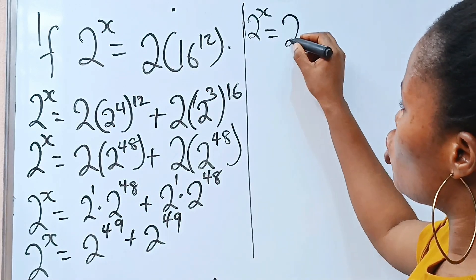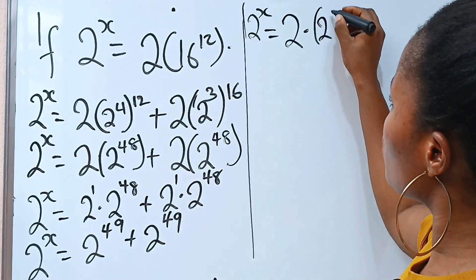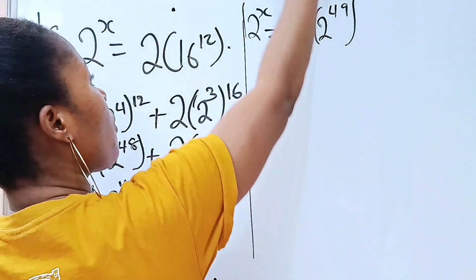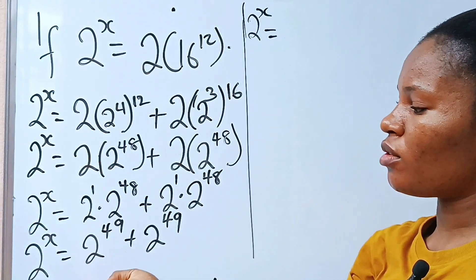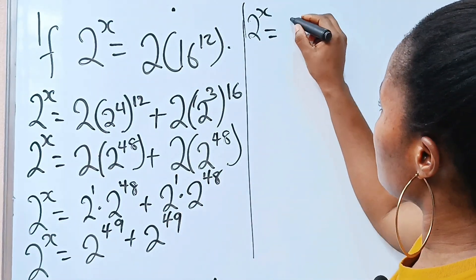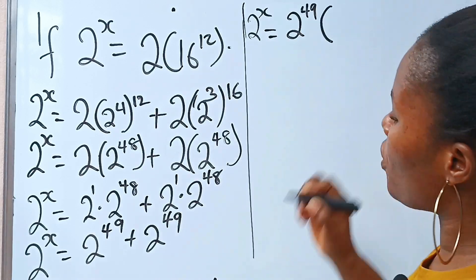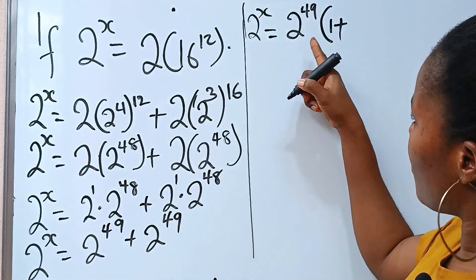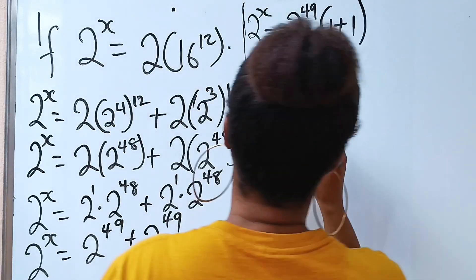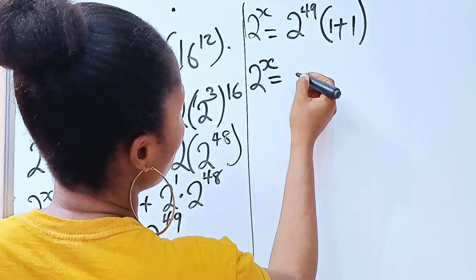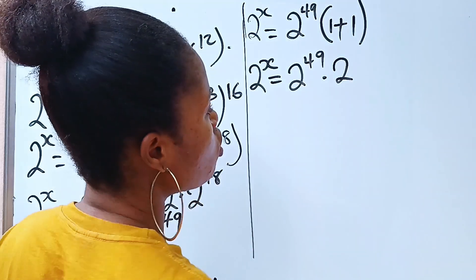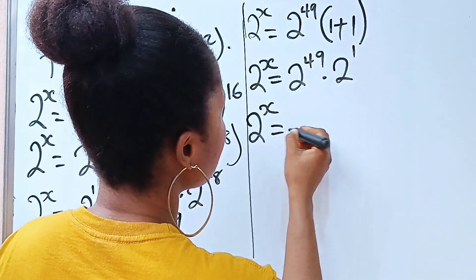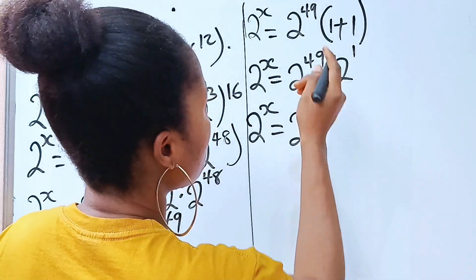This is the same as 2 multiplied by 2 to the power of 49. What do they have in common? 2 to the power of 49. So we write 2 to the power of 49, open brackets, and each term divided by 2 to the power of 49 gives 1 plus 1, which equals 2. So 2 to the power of x equals 2 to the power of 49 multiplied by 2, which is the same as 2 to the power of 1. Therefore 2 to the power of x equals 2 to the power of 50.